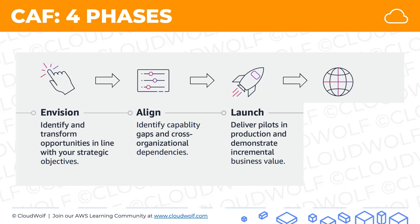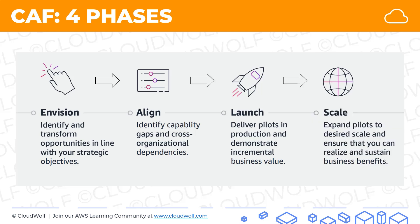Only after that do you launch: deliver pilots in production and demonstrate incremental business value with your cloud initiatives. Then once that's working, you scale: expand pilots to the desired scale and ensure you realize and sustain business benefits. This process repeats — after scaling, you go back to envision, then align, launch, and scale again, cycling continuously.